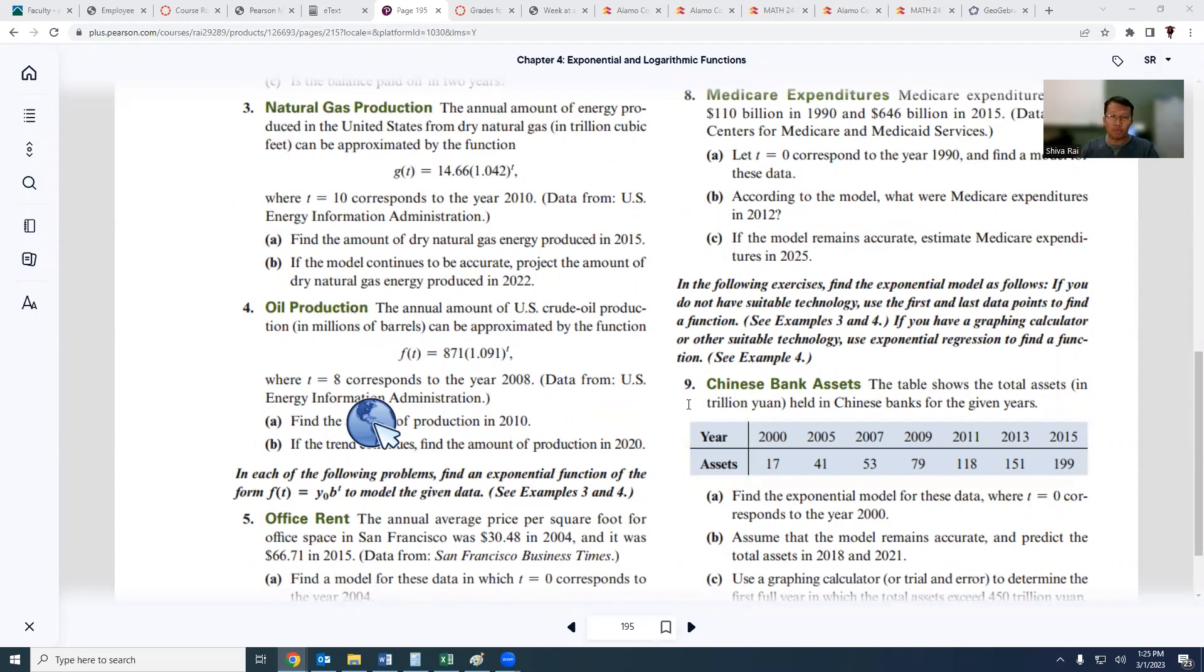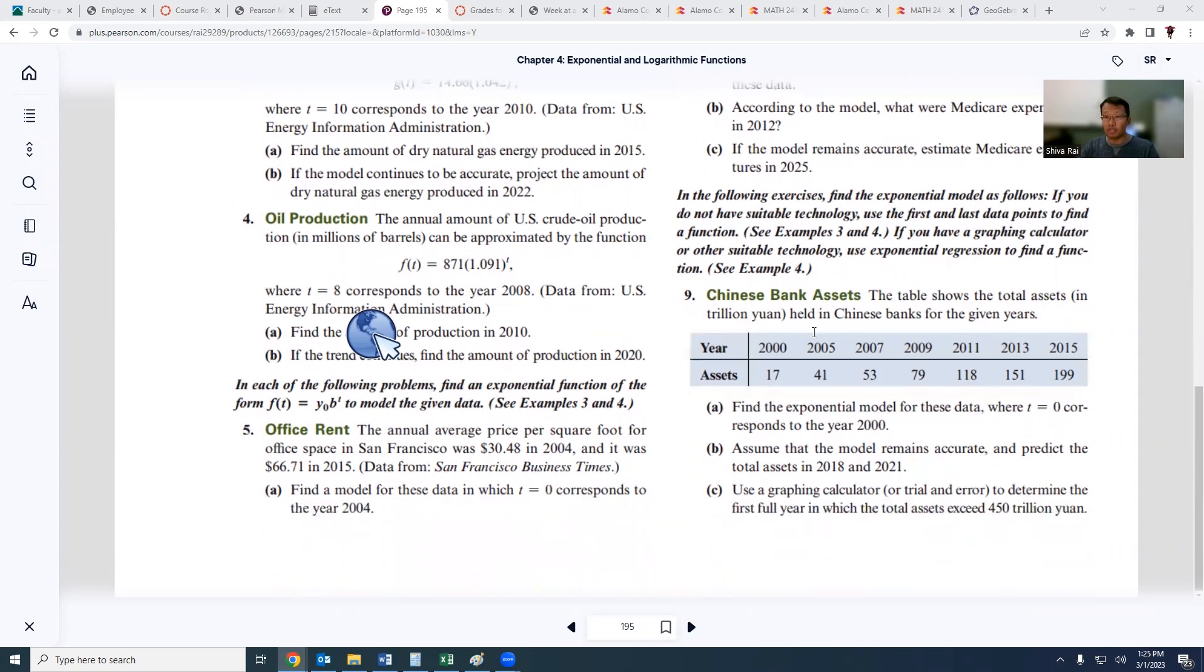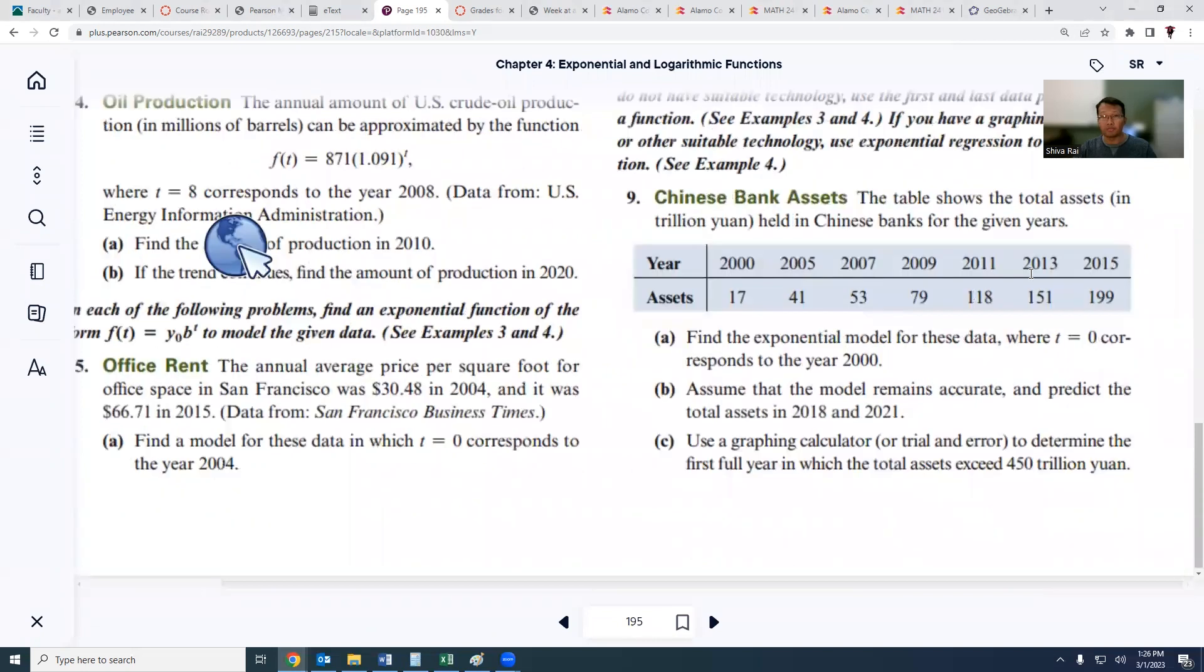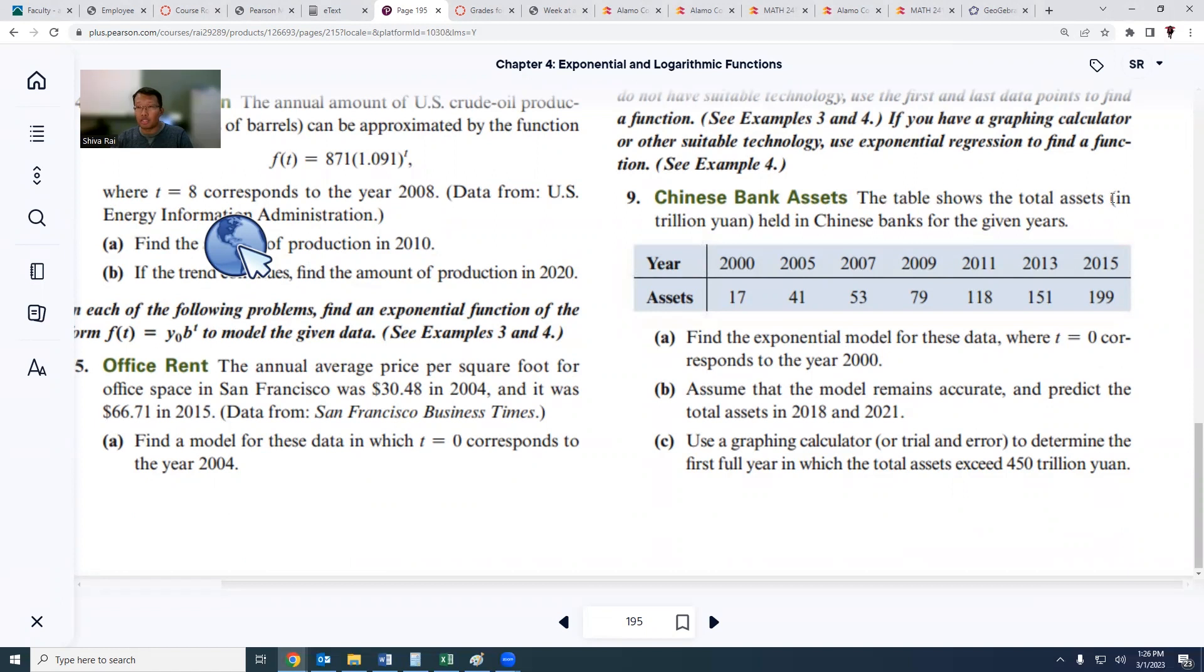Hello everyone, let us try to do a problem from our book. It's from page number 195 and it is talking about modeling exponential functions. Let's take this example. It's saying Chinese bank assets - the table shows the total assets in trillion yuan held in Chinese banks for the given years. In 2000 that's 17 trillion, 2005 is 41 trillion, 2007 is 53 and so on.